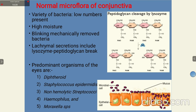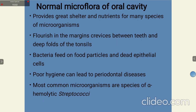Among the predominant organisms of the eyes, the normal microflora present includes diphtheroids or Corynebacterium diphtheriae, Staphylococcus epidermidis, non-hemolytic streptococci, Haemophilus, and Moraxella species. The normal microflora of the oral cavity will vary from stage to stage of life — a newborn baby will have different normal microflora than a young adult or elderly person.